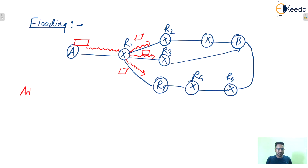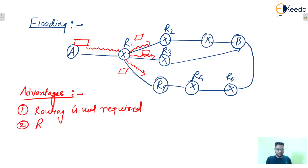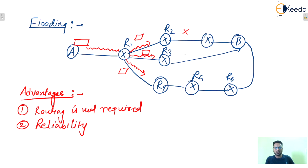Advantages of flooding: first, routing is not required, because routing requires some extra energy and extra calculation. So here routing is not required. Next, it is highly reliable. Reliable means it will be forwarded in all directions, so somehow it will reach the destination. If any link is down, or more than one links are down, then from another path it can reach the destination. So it is highly reliable.